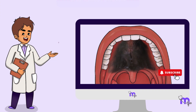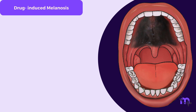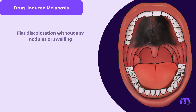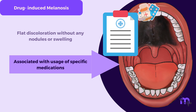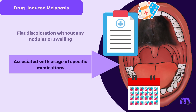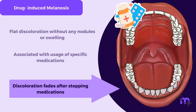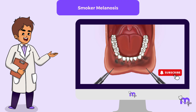Let us begin with drug-induced melanosis. Unlike malignant melanoma, drug-induced melanosis presents as a flat discolouration without any nodules or swelling. Reviewing a patient's medical history often reveals the use of specific medications within weeks or months before the pigmentation appears. In most cases, the discolouration fades away within a few months after stopping the medication.